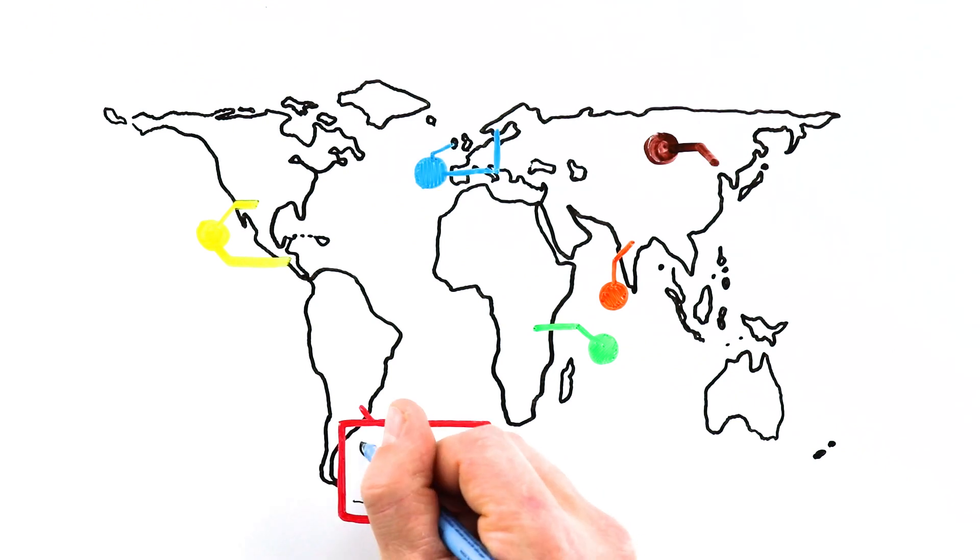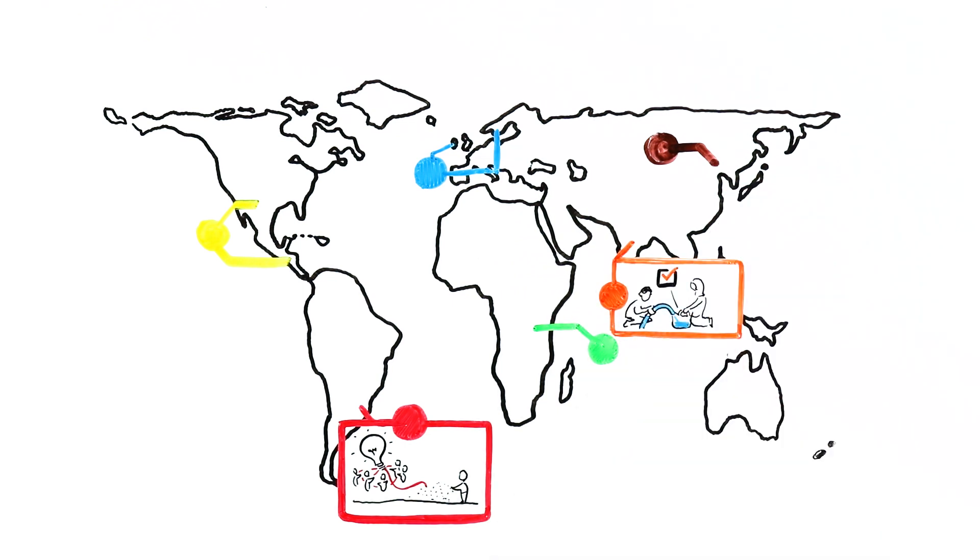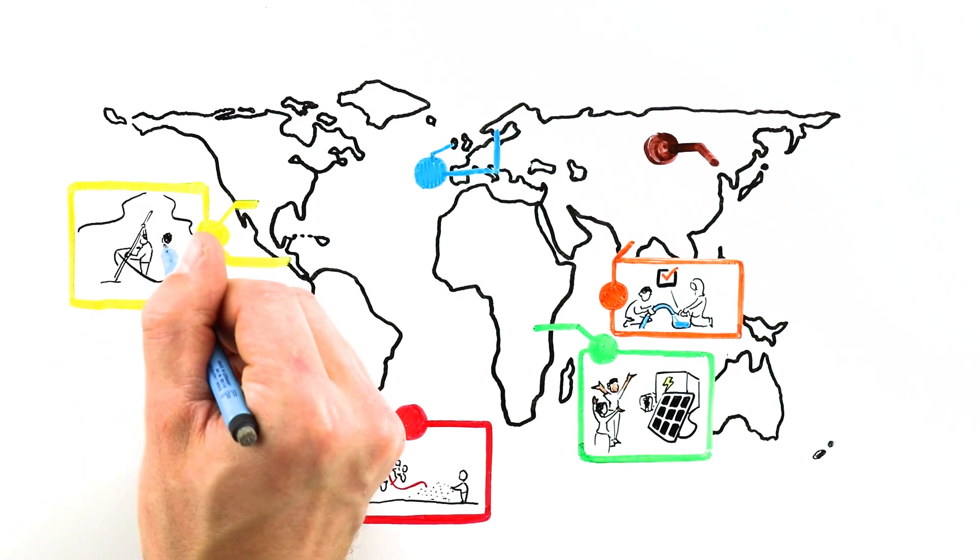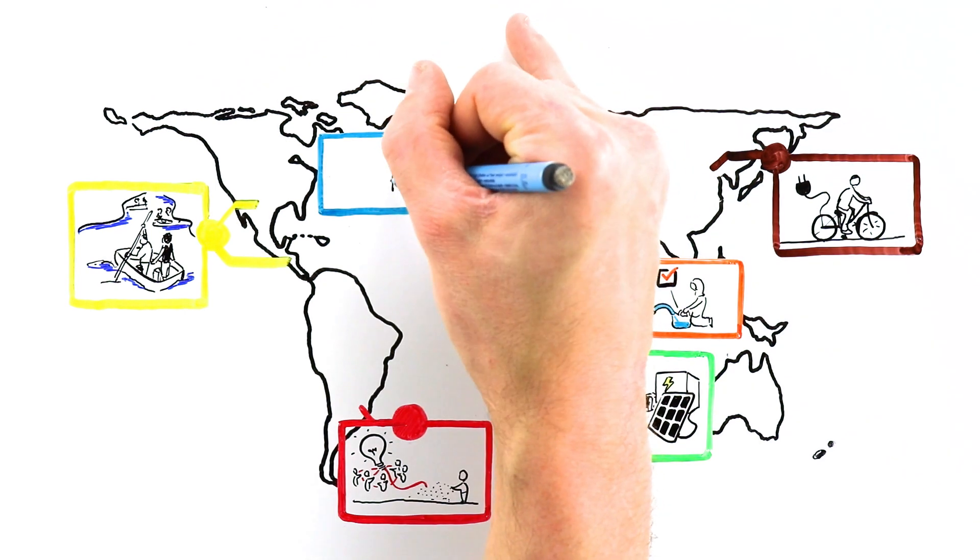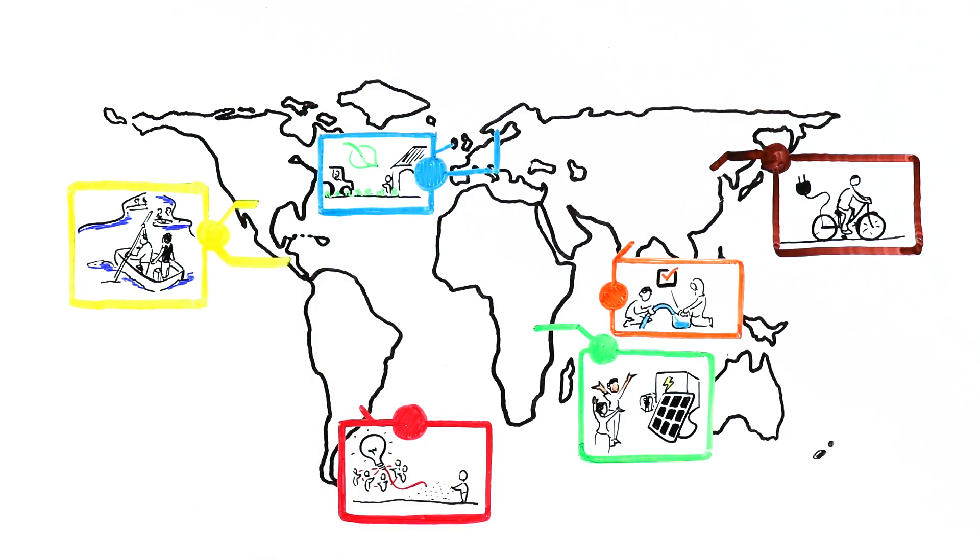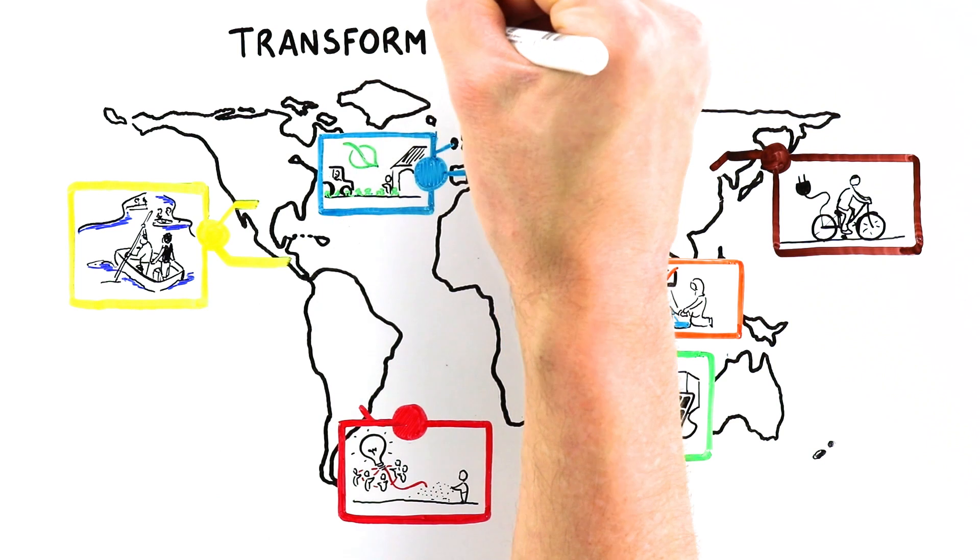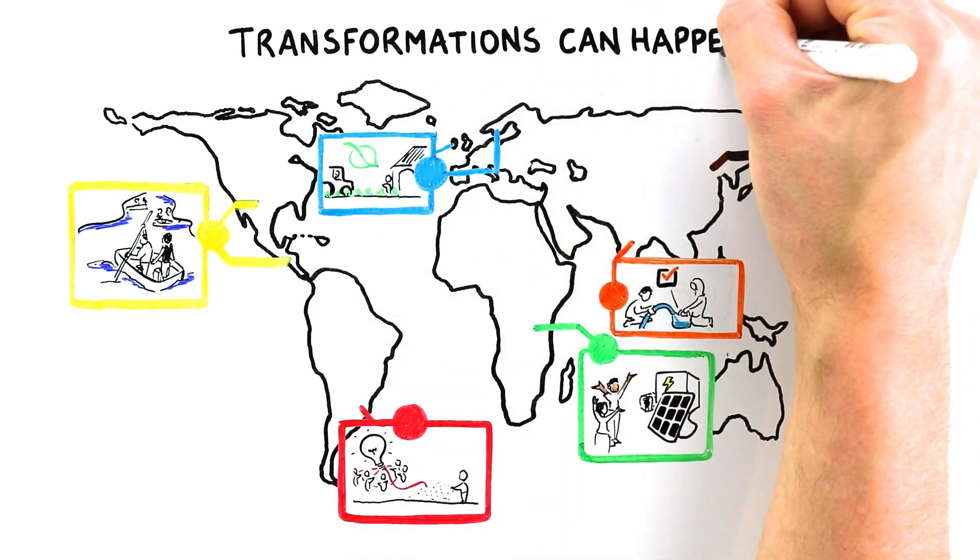Whether concerned with technology development in Argentina, urban pollution in India, off-grid energy in Kenya, water pollution in Mexico, low carbon change in China, or local agricultural systems in the UK, given the right conditions, transformations can happen.